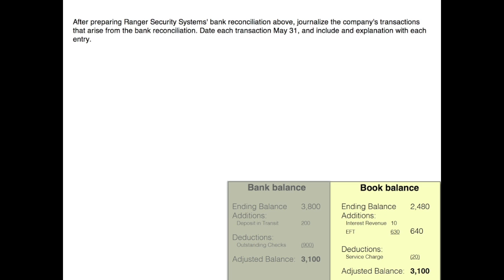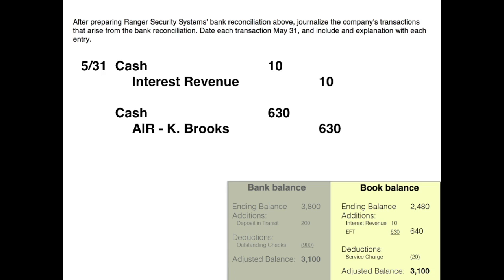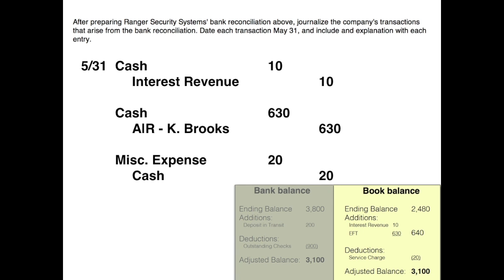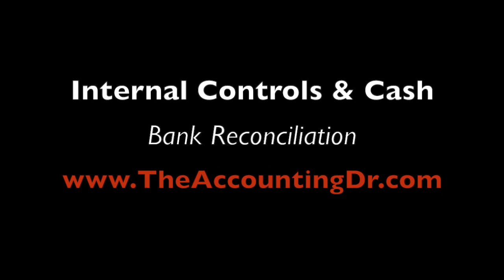All of these journal entries are going to affect cash because they're on the book cash balance. For interest revenue, you would debit cash and credit interest revenue. The EFT came from a customer in payment on their account, so you debit cash and credit accounts receivable for Kelly Brooks. For the service charge, since it's a very small amount, you would debit miscellaneous expense and credit cash. Don't forget: if you enjoyed the video give it a thumbs up, and questions and comments are always welcome.